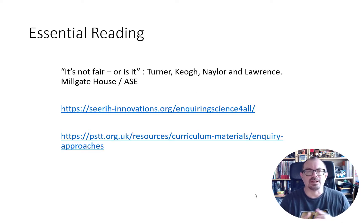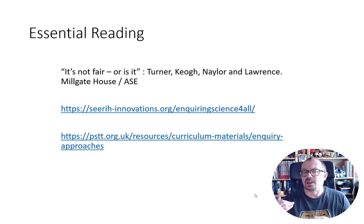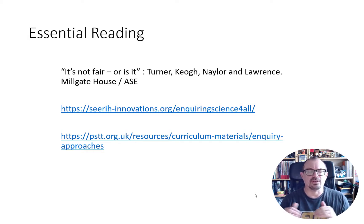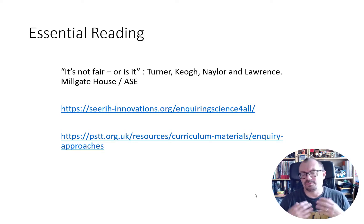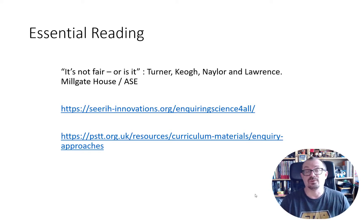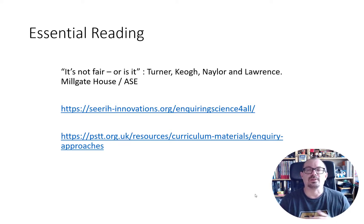For essential reading, a really good book — more of a staffroom book to share — is 'It's Not Fair, Or Is It?' by Turner, Keough, Naylor, and Lawrence. Find it on the ASC website or the Millgate House bookstore, or on Amazon. The Siri Innovations 'Inquiring Science for All' website has nice examples of different investigation types. Also the Primary Science Teacher Trust at pstt.org.uk has a lovely set of resources on inquiry approaches and inquiry skills. Always think about what is the best investigation type to match the question children have — it's not always going to be a fair test. It's about the question and coming up with methods to answer it.